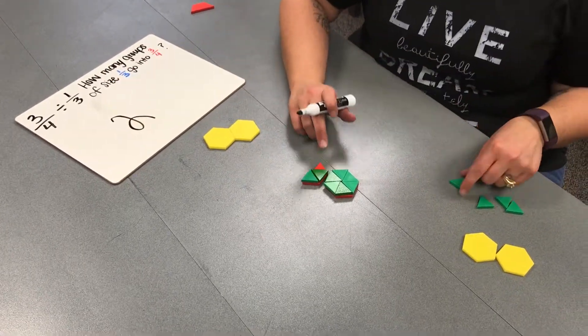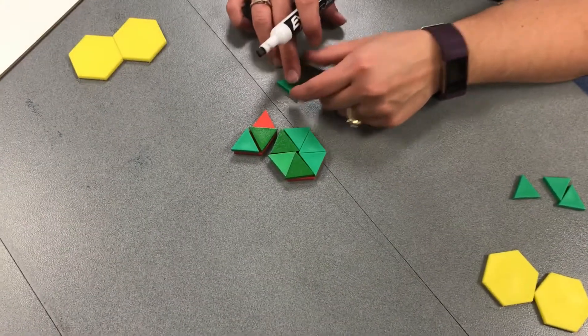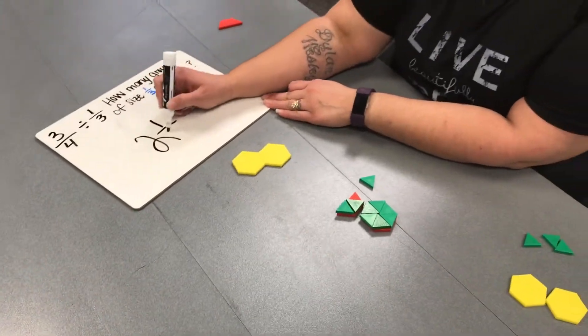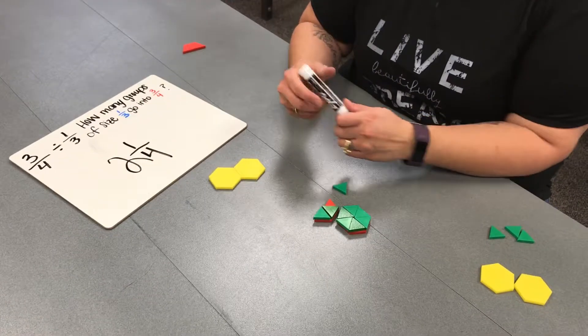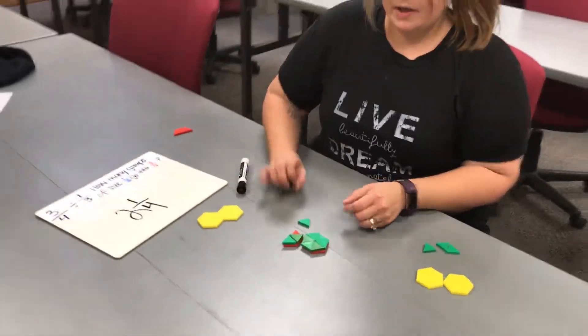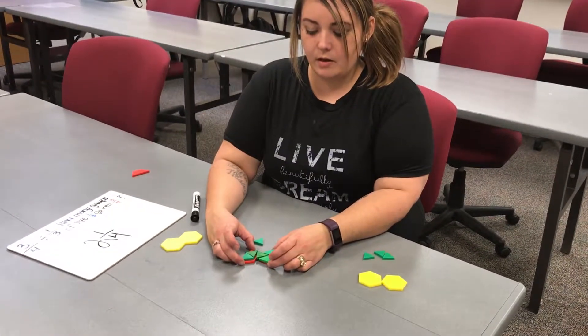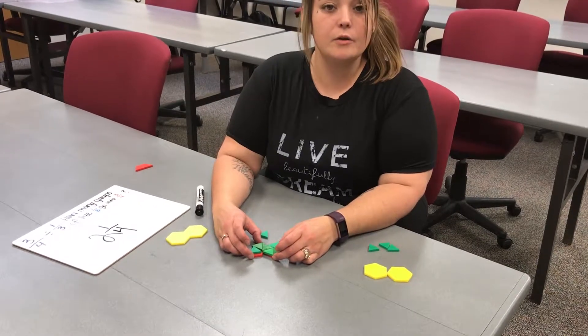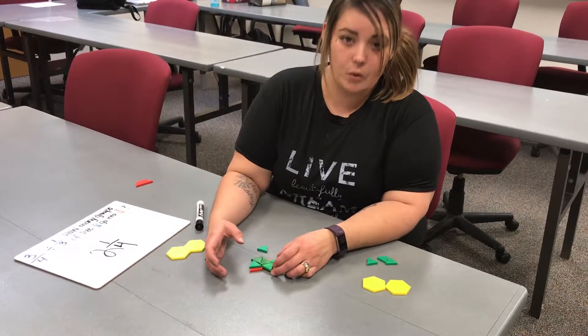And you can see we have one triangle left over, which would represent 1 fourth. Because we are determining how many times 1 third goes into 3 fourths.